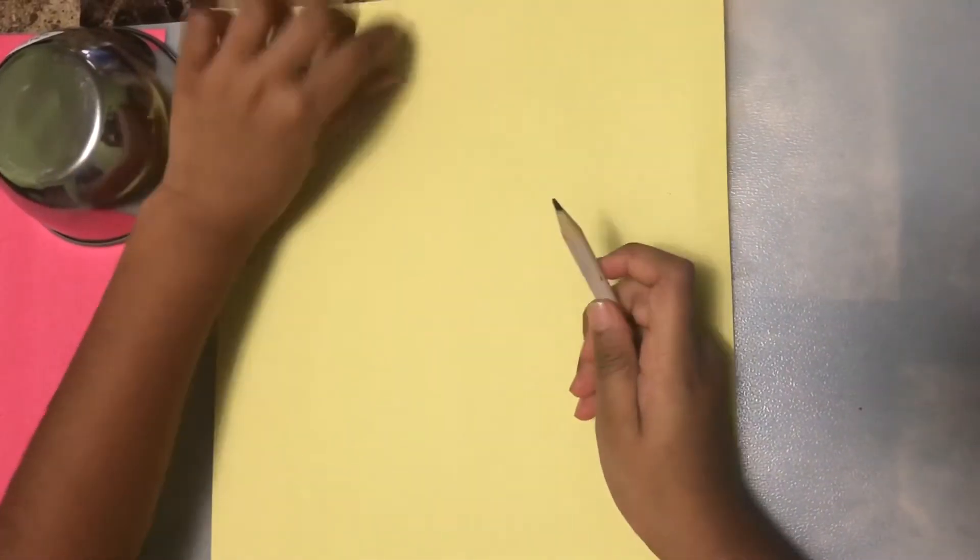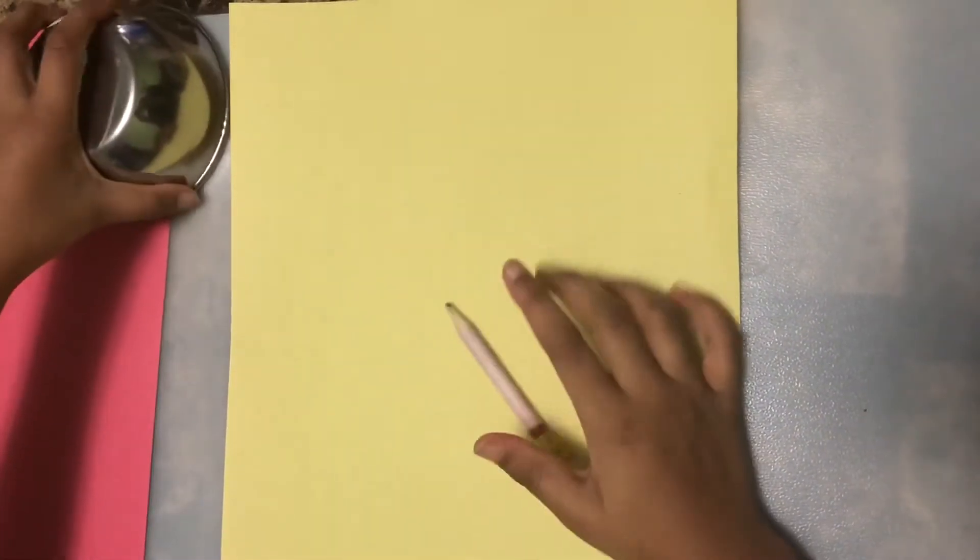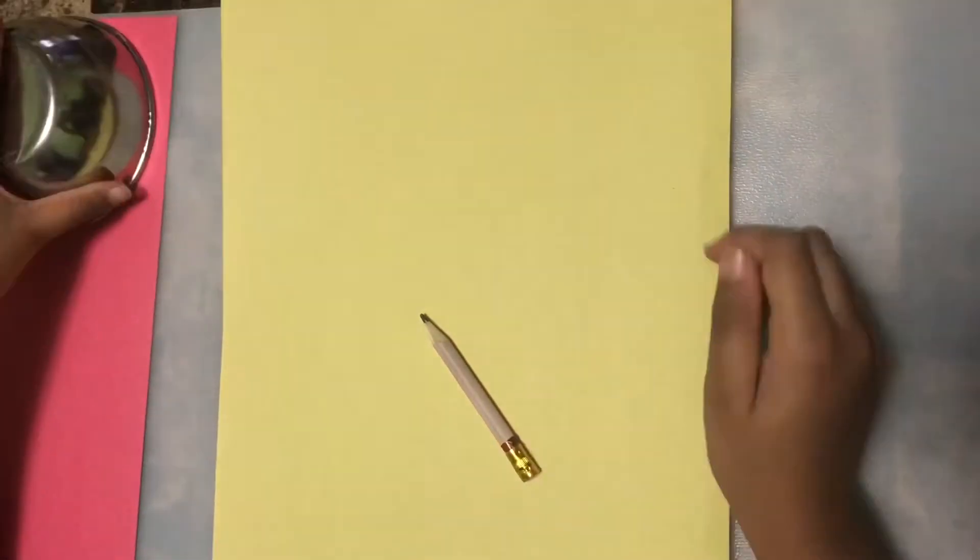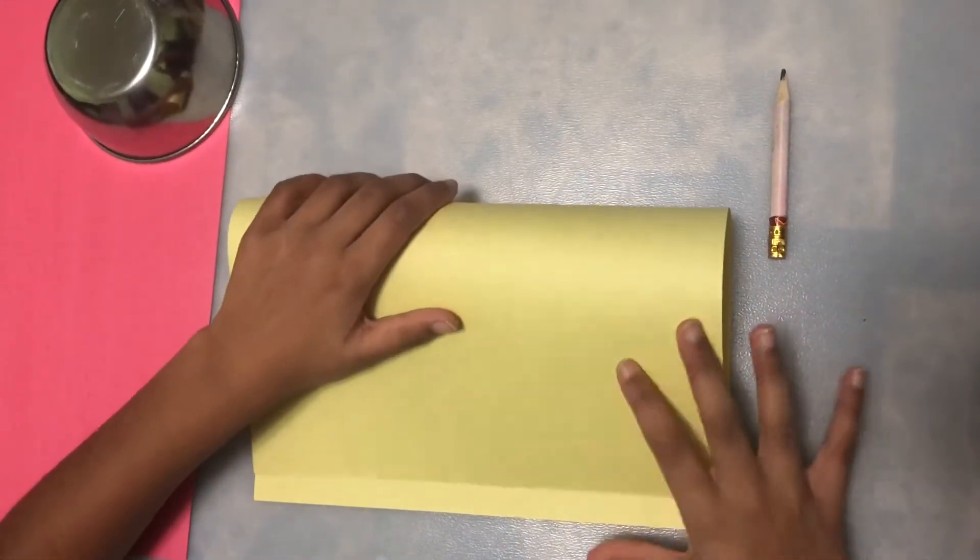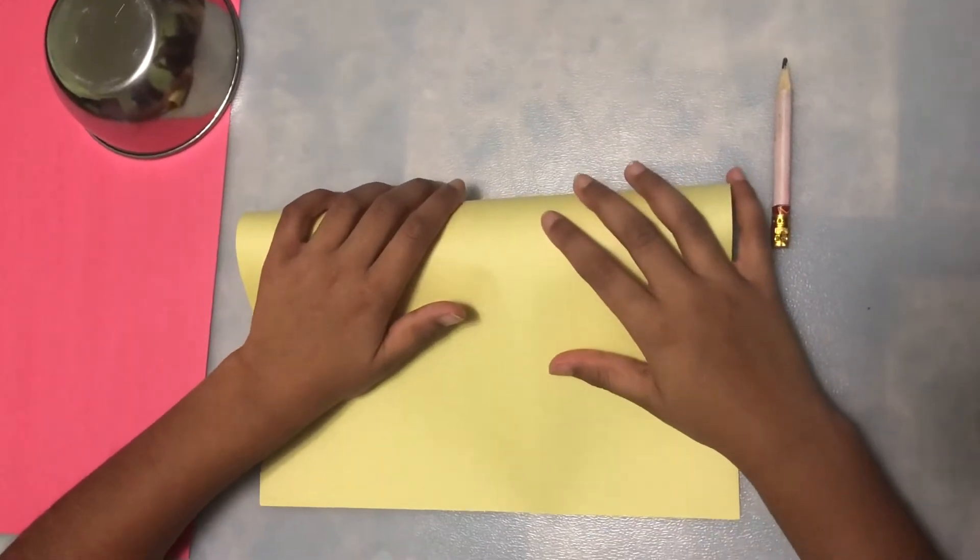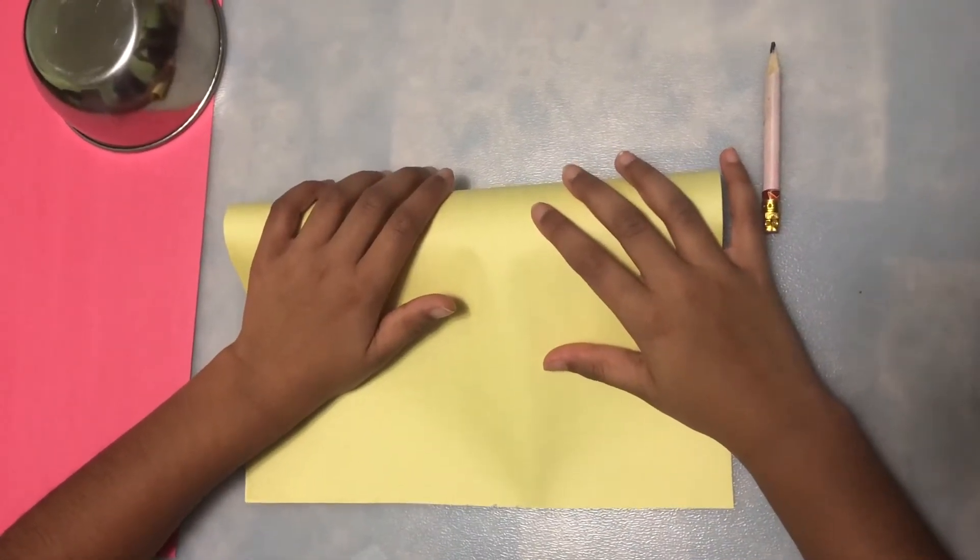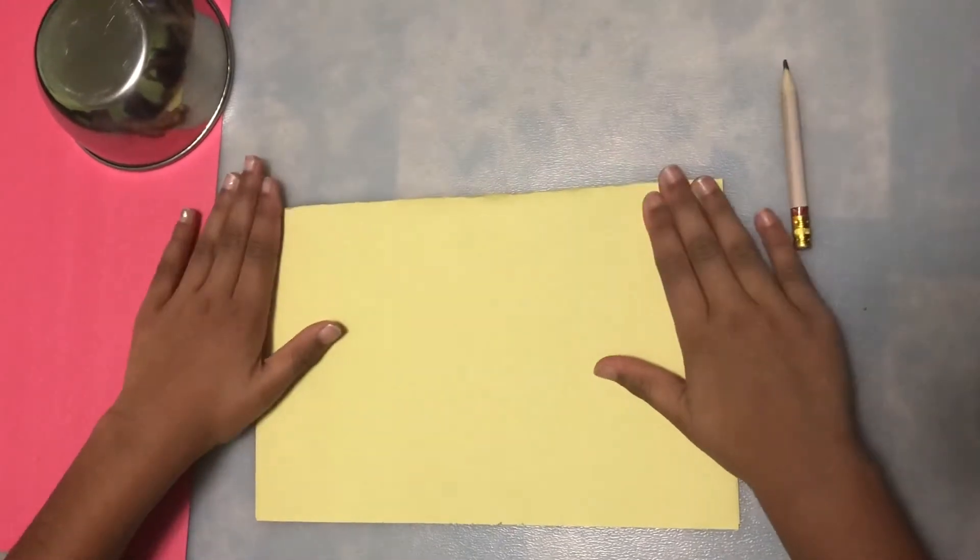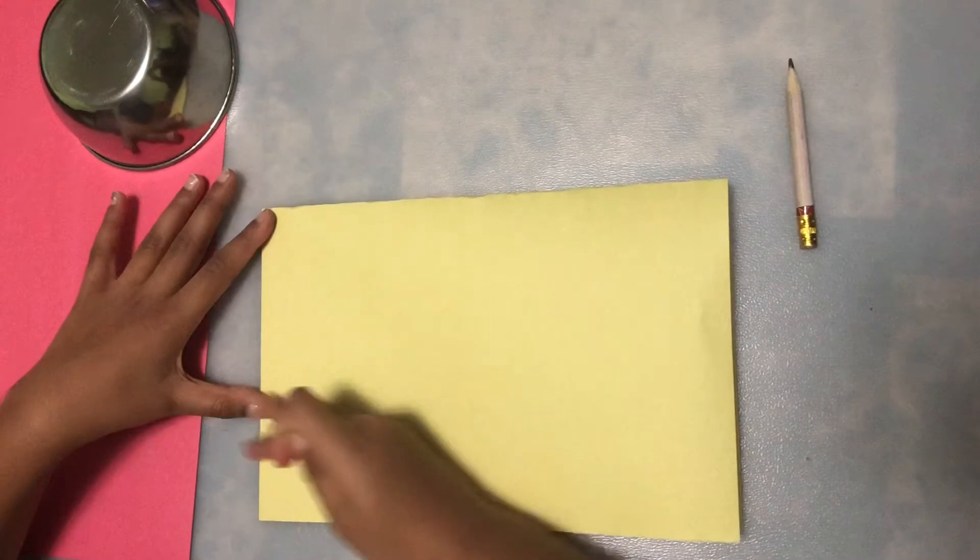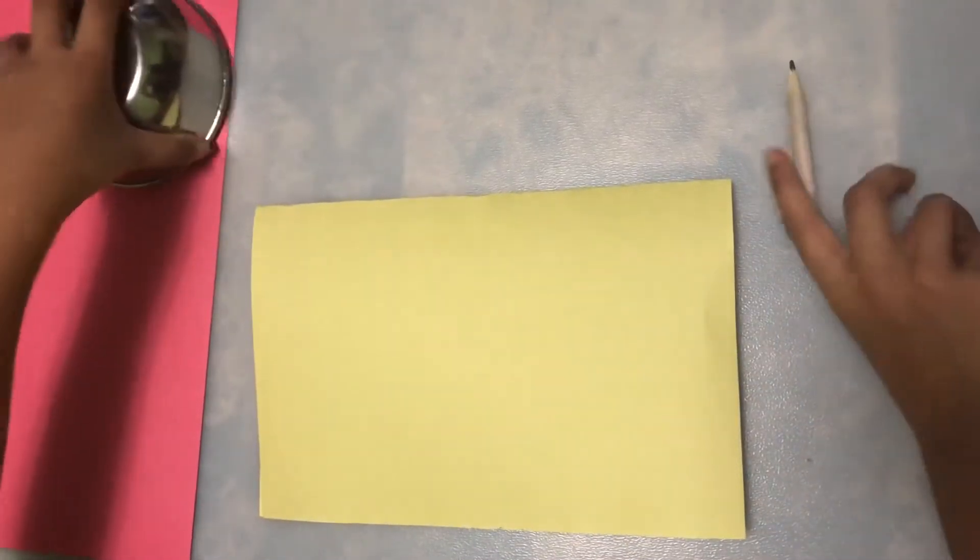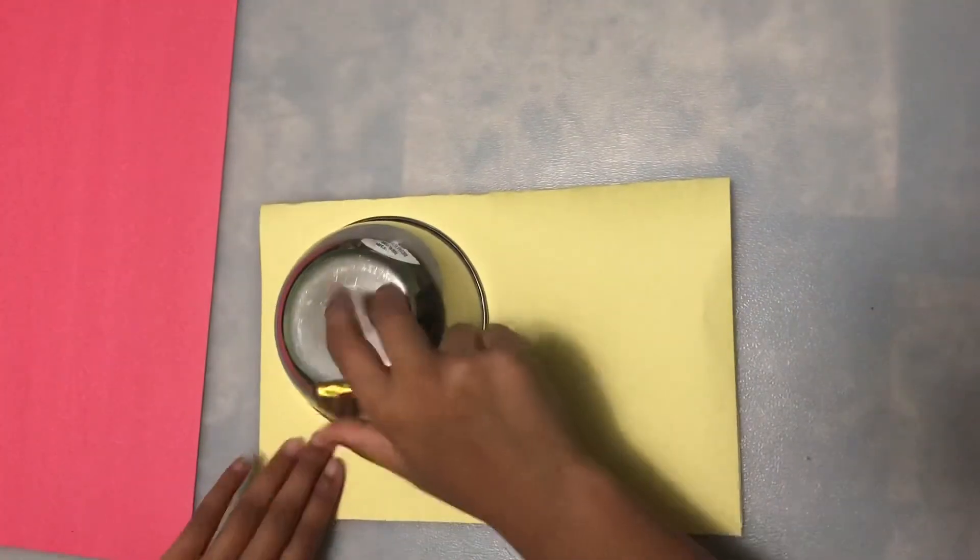So what you're gonna be needing is your yellow paper, a pencil, and a small dish. So you want to fold your yellow paper first into half like this. Nicely line it up and fold. And on the left side you want to get a bowl and trace it. Like this.